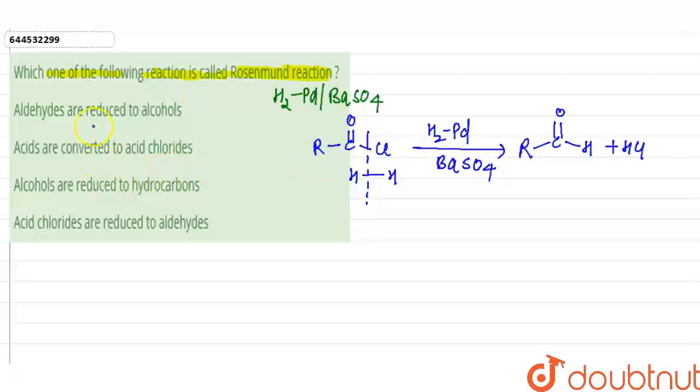the options here. The correct option is the fourth option, which is acid chloride reduced to aldehyde. So this option is correct here and all other options are incorrect. So this is the answer for this question. Thank you.